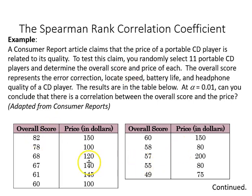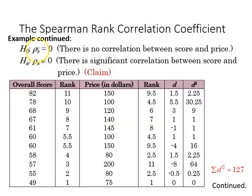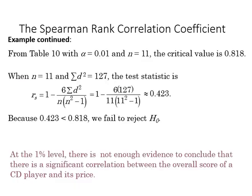These are the results. At the 0.01 level, we want to know if we can conclude that there is a correlation between score and price. Our null is that there's no correlation, and our alternative is that there is a correlation, which is our claim. Here's our table with overall score, rank, price, rank, difference, and difference squared. With a 0.01 level and n equal to 11, the critical value is going to be 0.818.